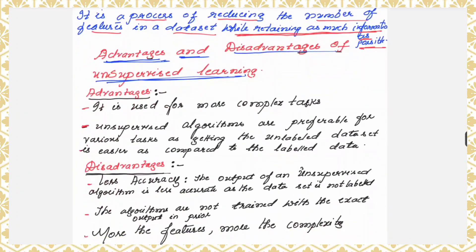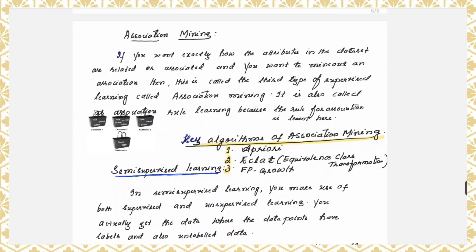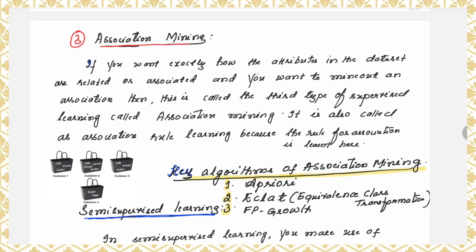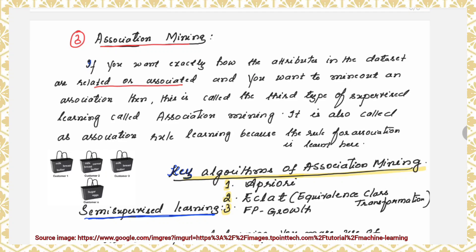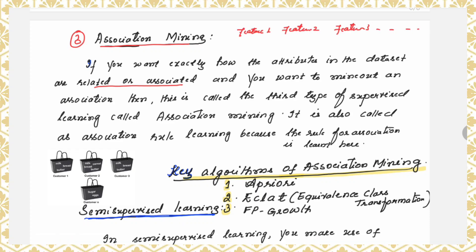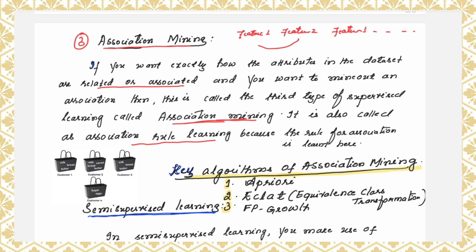The third type of unsupervised learning is association mining. If you want to know how the attributes in a dataset are related or associated — because the dataset has more number of features, feature 1, feature 2, feature 3 — and you want to see how those features are related or associated with each other, then association comes into picture. This is called association mining, also called association rule learning, because you are going to learn the rule for association.